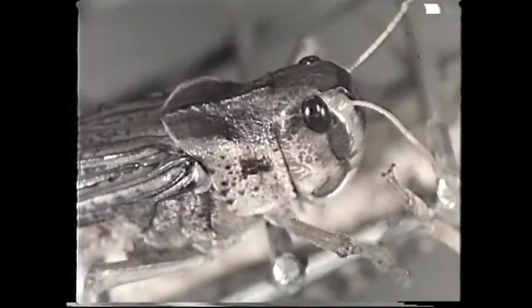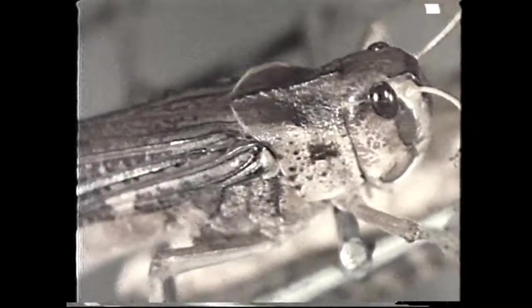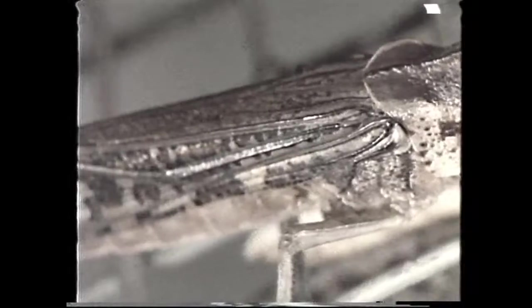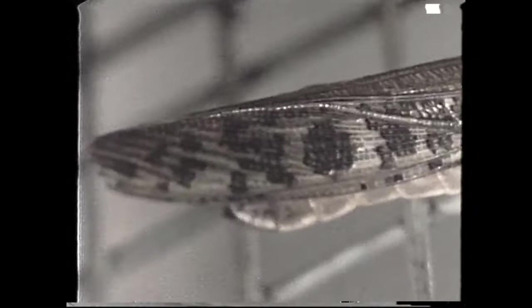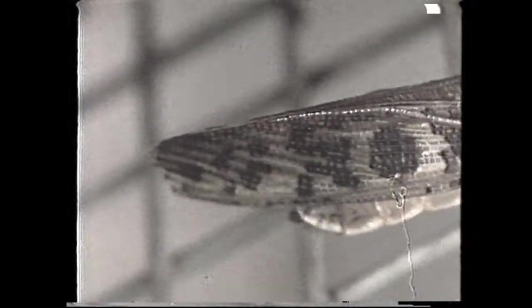The experiment booklet contains data from such experiments which you can now use to investigate the nature of the patterns of nerve impulses in the DCMD of the locust. Then you can try to relate this to the insect's escape response from possible predators.